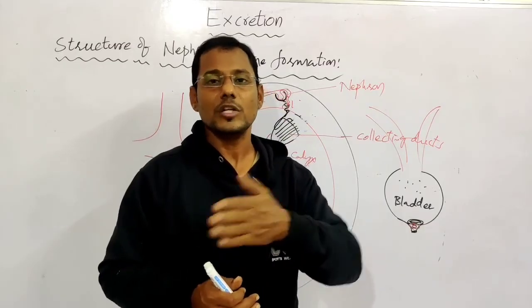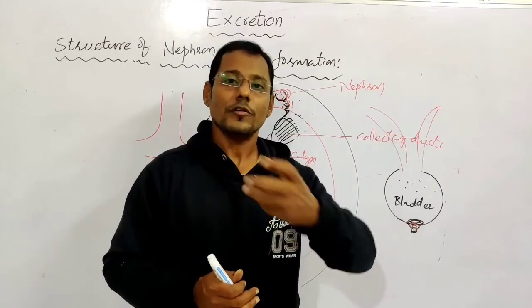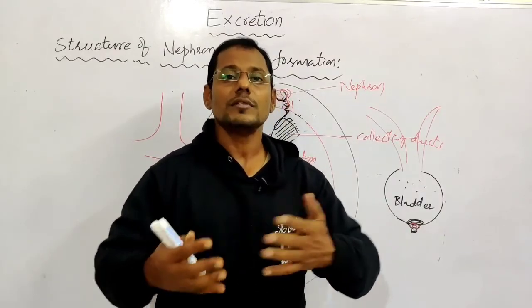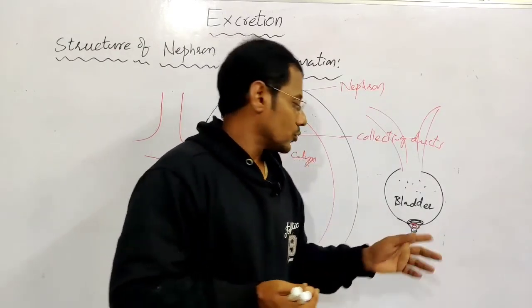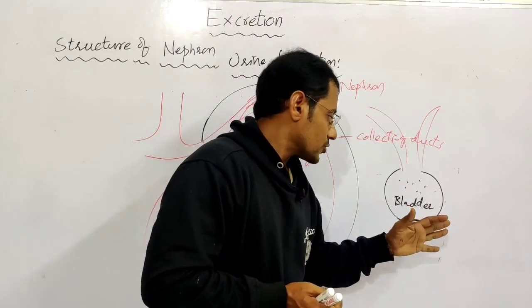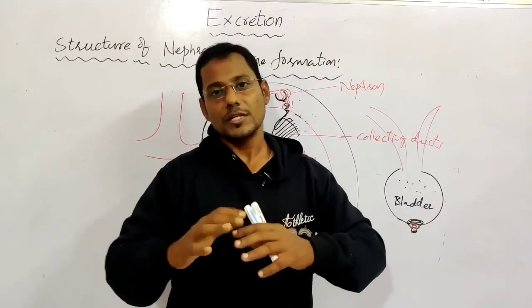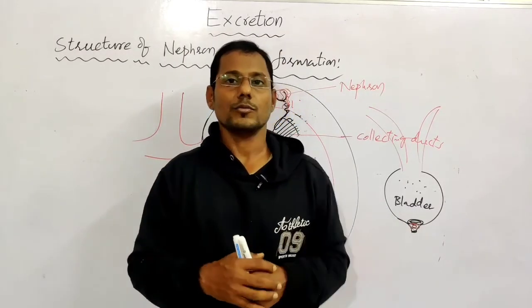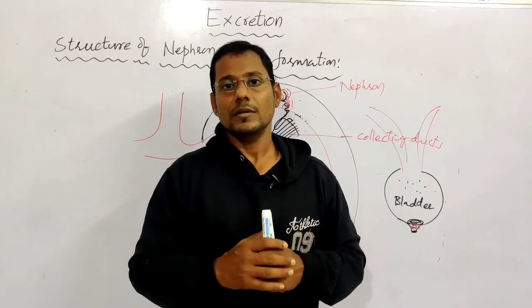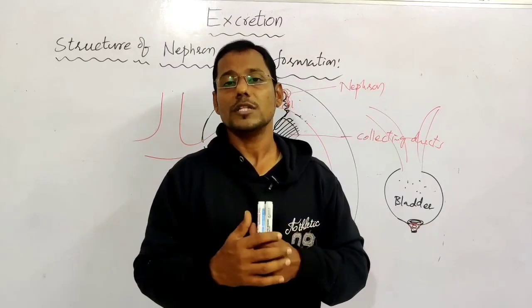The voluntary sphincter muscle's contraction and relaxation is completely under our control, so we can control micturition. In the case of children, they cannot control the contraction of this sphincter muscle, so they pass urine unconsciously. As we grow, the sphincter muscle becomes fully under our voluntary control. This is the complete structure of the kidney and how urine is formed in our body.